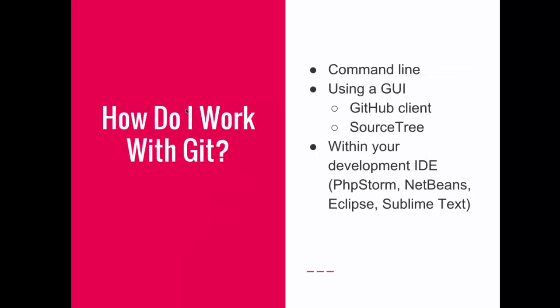There are basically three ways in which you can work with Git. You can do it in the command line — it's not scary at all, I use the command line 99% of the time. You can use a GUI client like GitHub Client or SourceTree, which is Atlassian's Git client. The GitHub Client integrates fantastically with GitHub, and SourceTree integrates very well with Bitbucket because they're created by the same company. If you use an IDE such as PHP Storm, NetBeans, which is free, or Eclipse, which is also free, then you also have Git tools integrated into that platform.